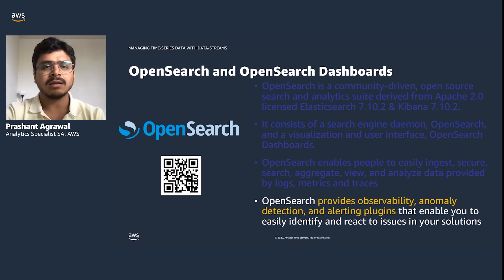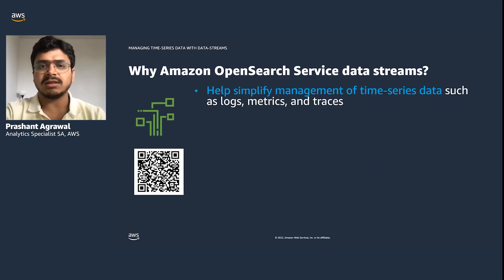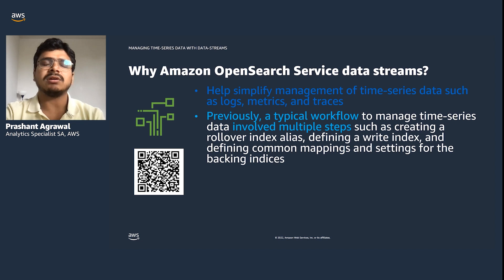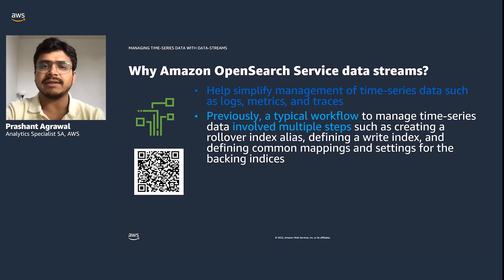Let's see why we need data streams. One of the common use cases with OpenSearch is to index continuously generated time series data such as logs, metrics, and traces. Previously, automating index rollover meant you had to first create a write index, configure a rollover alias, and verify that indexes were being rolled over as expected, making the bootstrapping process more cumbersome than it needs to be.